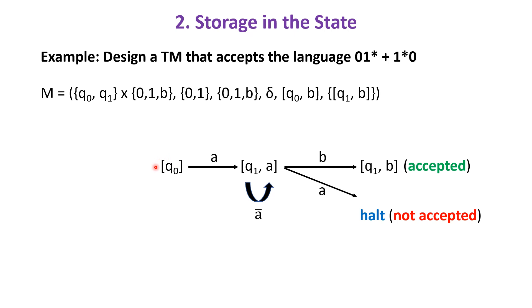The initial state [q0, B] for the input a, which is the first symbol of the input string w, reaches a new state [q1, a].